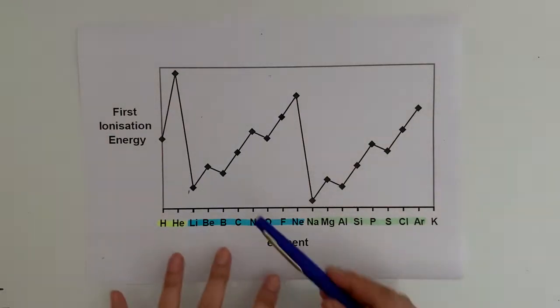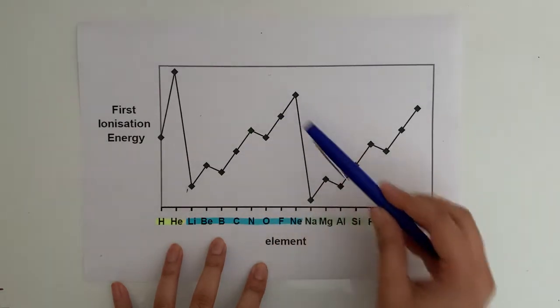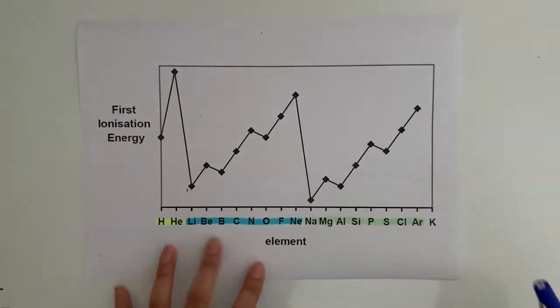Now that we've addressed the general trend across a period, across period two and across period three, we've got a general increase. What we can now do is discuss where we have these unexpected dips.